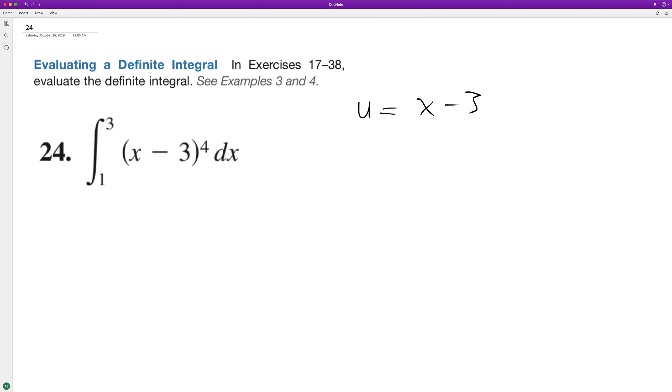So when we integrate this, u to the 4th becomes u to the 5th over 5.